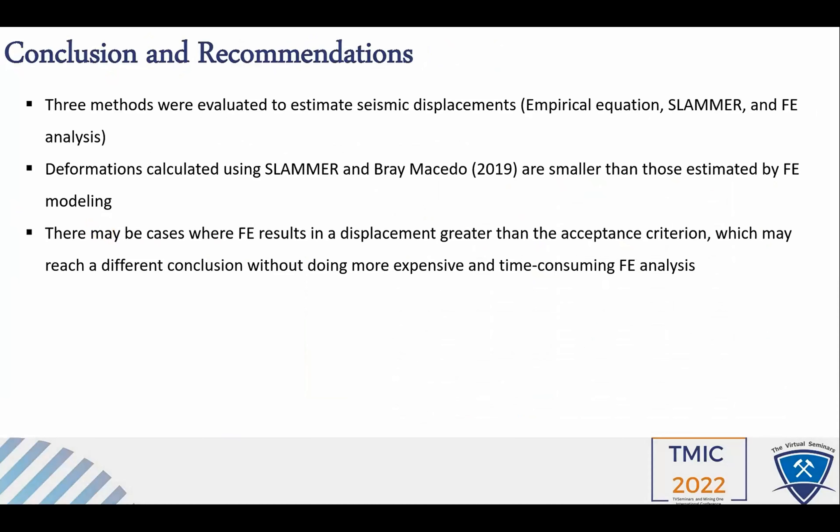In conclusion, three methods were used to estimate the deformation of the slope: the empirical equations of Bray and Macedo 2019, SLAMR code, and finite element analysis. The deformation calculated from SLAMR and Bray and Macedo's are smaller than those estimated by finite element models. There may be cases for which the simplified method and the Newmark time history method result in acceptably small permanent displacement, whereas the finite element method results in permanent displacement greater than the acceptance criterion.